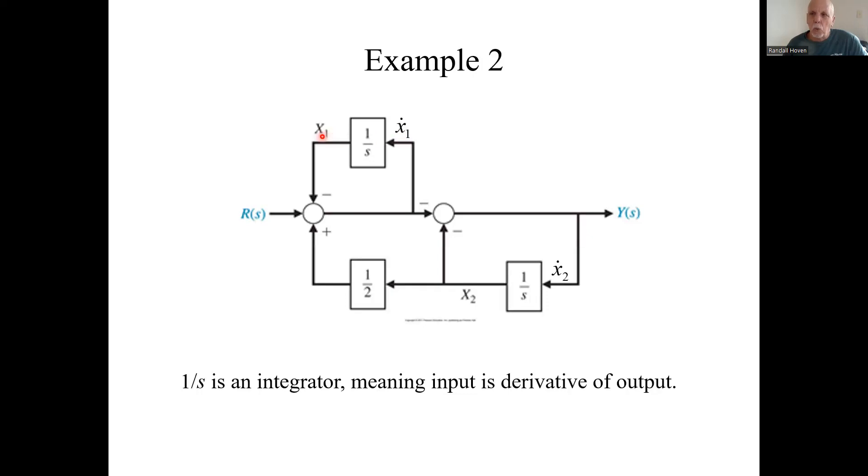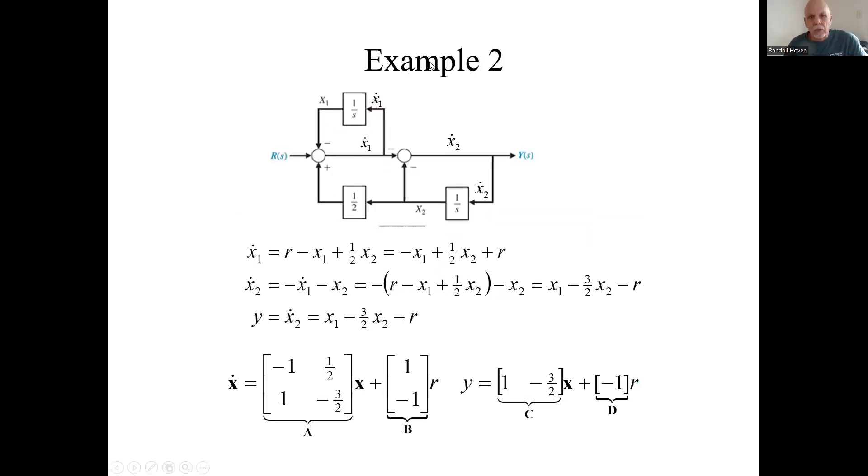x₁ dot goes in, x₁ comes out. Same here: x₂ dot goes in, x₂ comes out. Now let's look at what that means. What is x₁ dot? Let's see: r minus x₁ plus one-half x₂. I have an equation for x₁ dot.